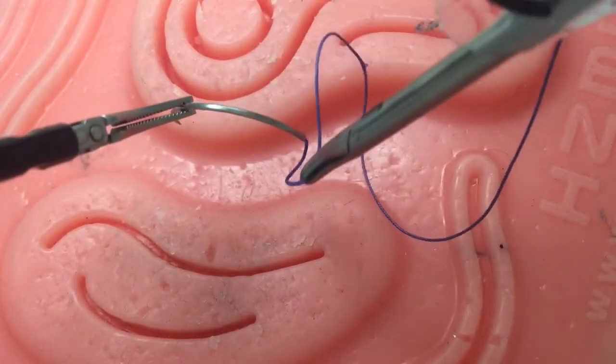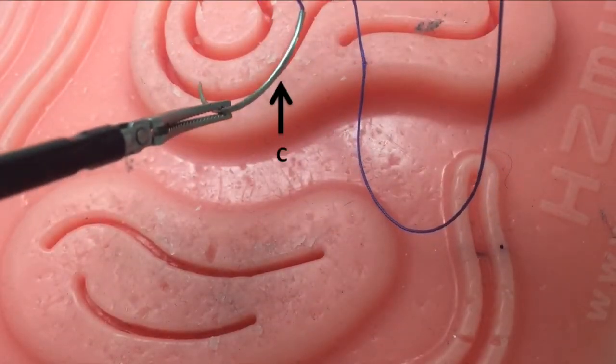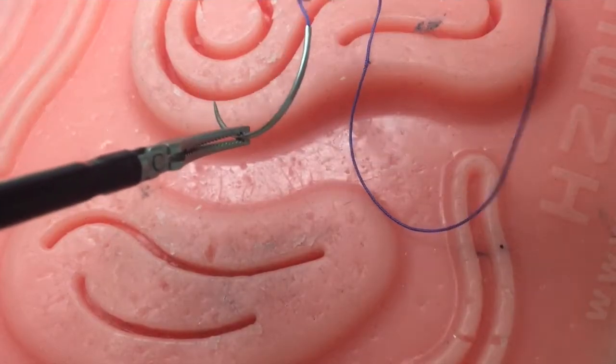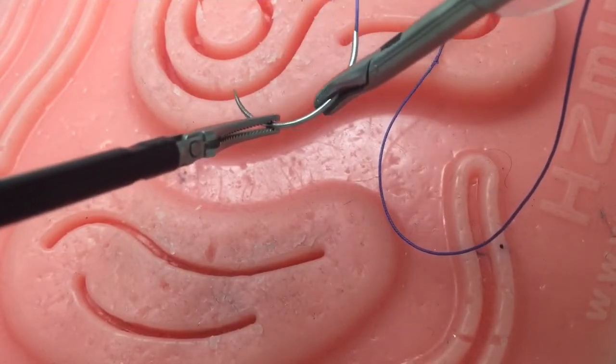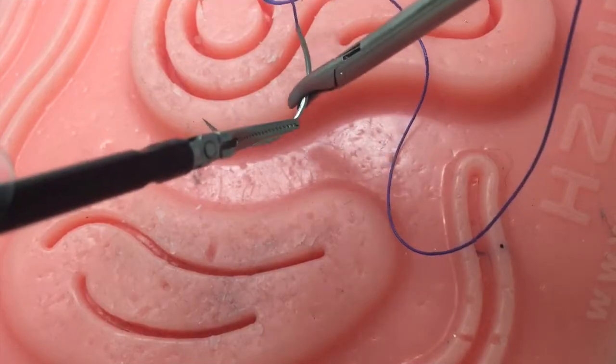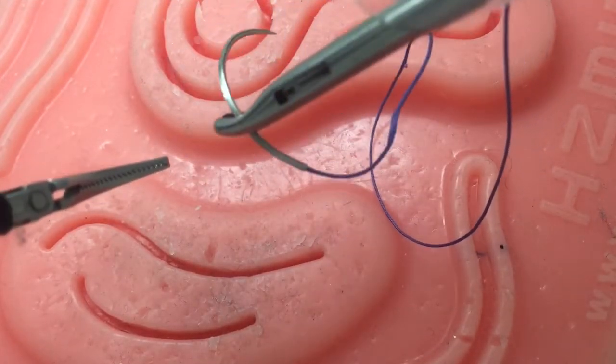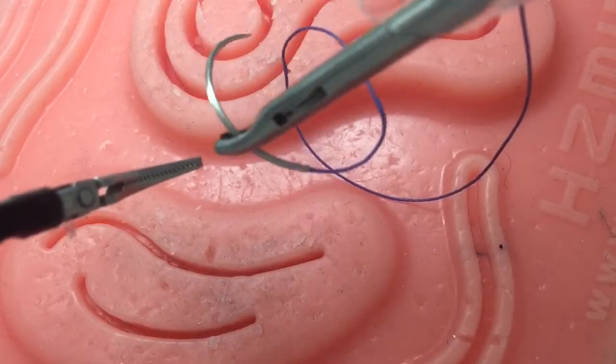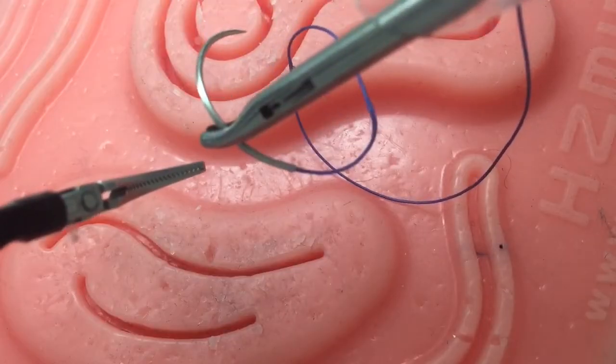Needle Loading. Swivel the needle such that the light evenly reflects off point C. Then, using the needle driver, grasp the needle firmly at point C. Release the needle from your left instrument and do a couple practice throws to ensure the needle was loaded approximately 90 degrees to the driver.